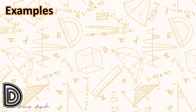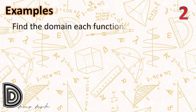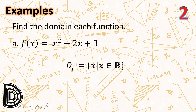In the previous examples, graphs aided us in finding the domain and range. Now let us consider finding the domain without sketching a graph. Letter A: f(x) = x² - 2x + 3. This function has no denominator and involves no even root, so no matter what real number we substitute for x, we always find a corresponding real number for y. Therefore the domain of f is the set of all real numbers.